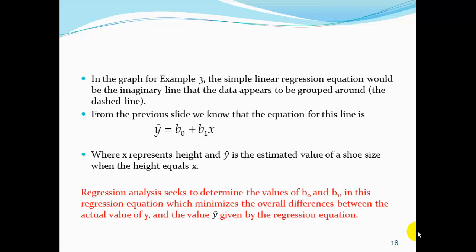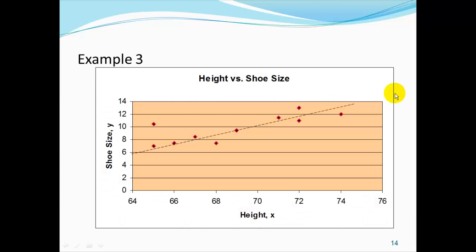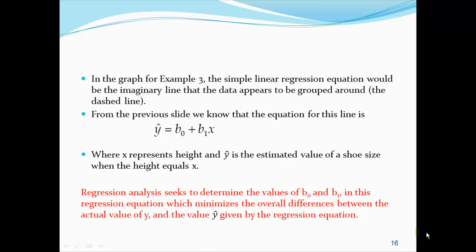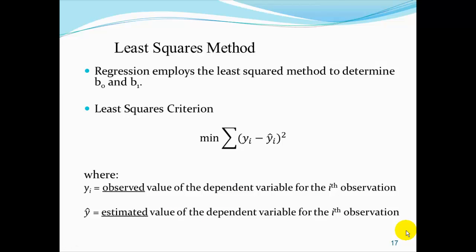In the graph for Example 3, the simple linear regression equation would be the imaginary line that the data appears to be grouped around. Regression analysis seeks to determine the values of b0 and b1 in this regression equation, which minimizes the overall differences between the actual value of y and the estimated value y-hat given by the regression equation. Regression analysis employs the least-squares method to determine the b0 and b1 values, seeking to minimize the sum of the squared differences between each yi value and the estimated value of y for that observation.